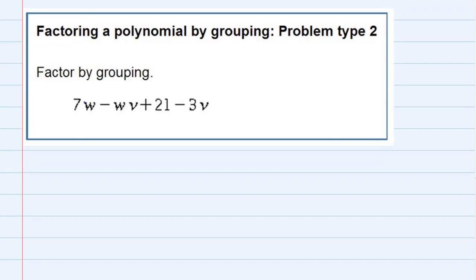Factoring a polynomial by grouping, problem type 2. We're asked to factor by grouping and we have four terms, so we're gonna group the first two terms together and then factor the second two terms together.